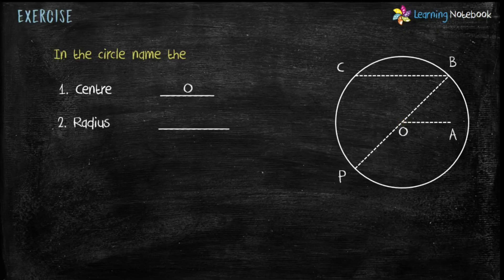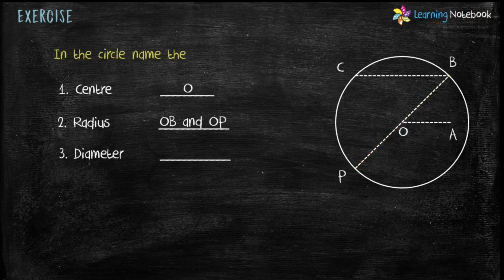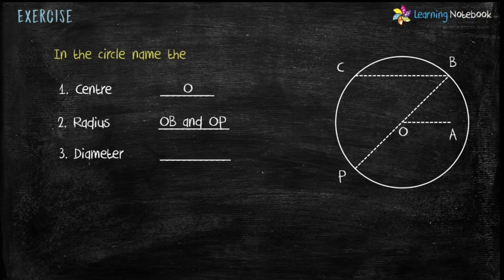Next, radius of this circle which is OB and OP. Third is diameter. Students, we learnt that the line passing through the center is the diameter of the circle. So here, BP is the diameter of the circle.